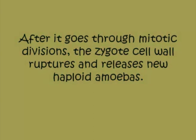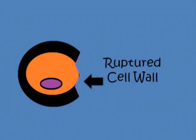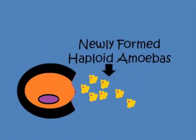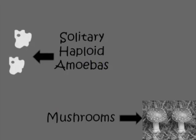After it goes through mitotic divisions, the zygote cell wall ruptures and releases new haploid amoebas. And the cycle starts over again.